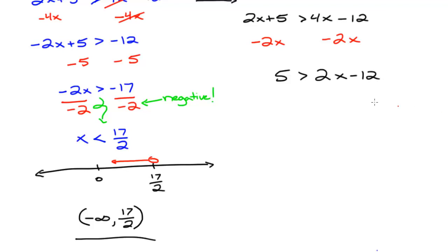I get left 5 is greater than 2x minus 12. And then I'm going to add 12 to both sides because now I have a two-step inequality here. And then divide by 2.